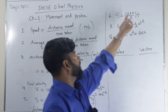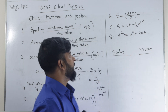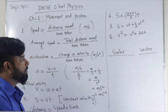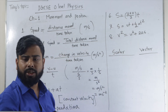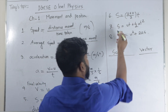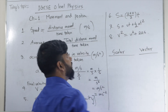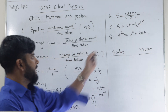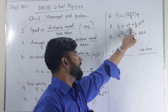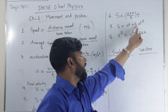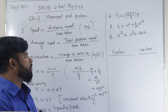So S equals U plus V divided by 2, multiplied by T — where initial velocity plus final velocity divided by 2 is the average velocity. Another formula: S equals U times T plus half A times T squared. Here S is the distance, U is the initial velocity, T is the time, A is the acceleration, and T squared is time squared.